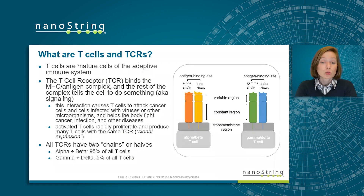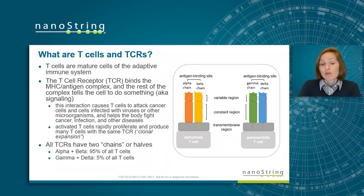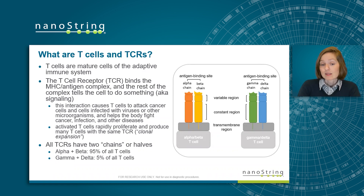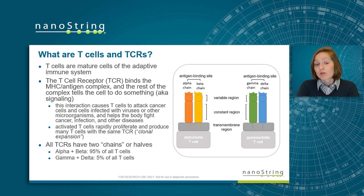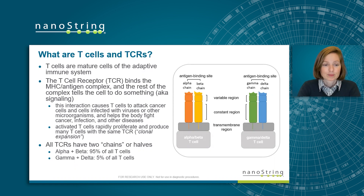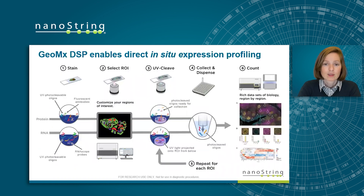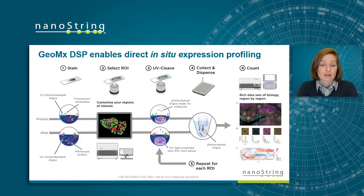All TCRs have two chains, or halves: alpha-beta T-cells, which make up 95% of T-cells, and gamma-delta T-cells, which make up about 5% of T-cells. Both of these are outlined in the schematic on the right.